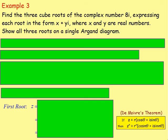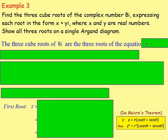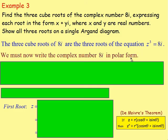Example 3: find the three cube roots of the complex number 8i, expressing each root in the form x + yi where x and y are real numbers, and show all three roots on a single Argand diagram. This means finding three roots of the equation z³ = 8i.